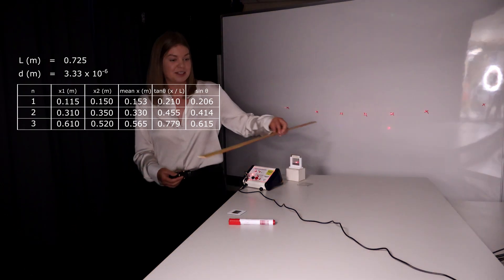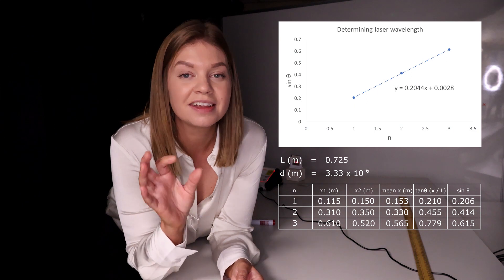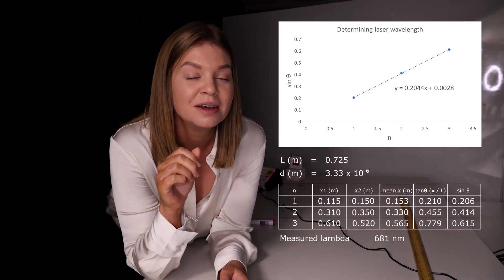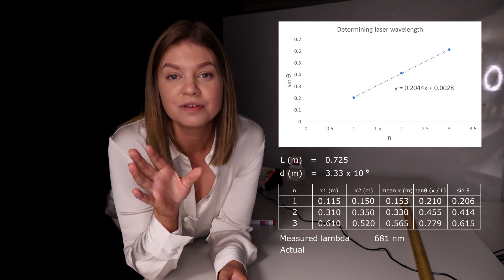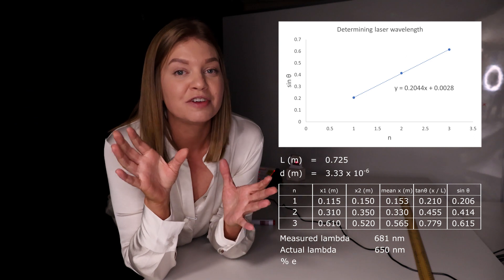Now we can use this data to plot a graph, and by taking the linear fit, we can then use the gradient to calculate a value for wavelength, which is 681 nanometers. By comparing this to the actual value of 650 nanometers, we can see that we've measured the wavelength to within 5% error.